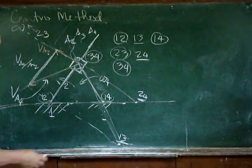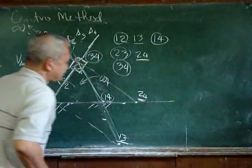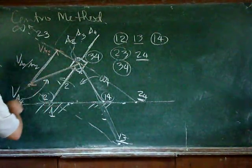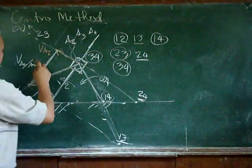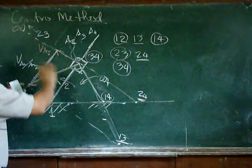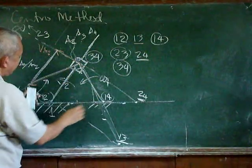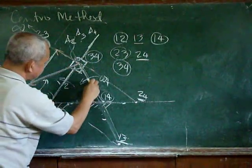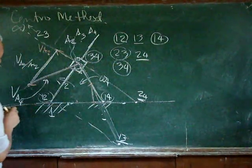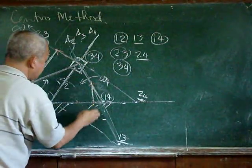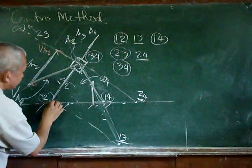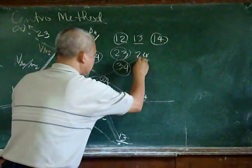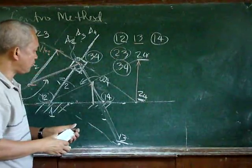By way of this instant center we can also determine the velocity of A on 4. If we transfer this arc passing through A2 and transfer this velocity vector here, that velocity vector is transferred to this location. We can then make a proportionality line to find the velocity of center 2-4.